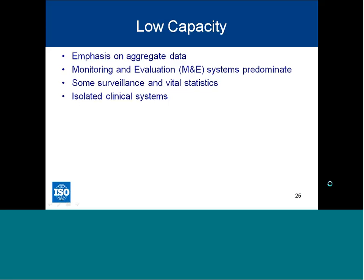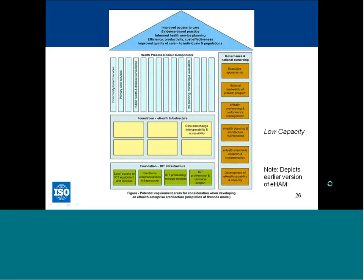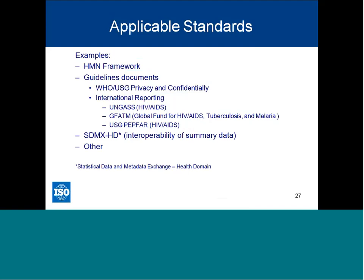In a low capacity state, the country focuses on very specific health process domains such as primary care, community, and public health, with limited infrastructure, some data interchange, and some level of interoperability and accessibility. Applicable standards reflect the monitoring and evaluation, vital statistics, and surveillance requirements relevant to that capacity level — a set of example standards is shown for those particular requirements.